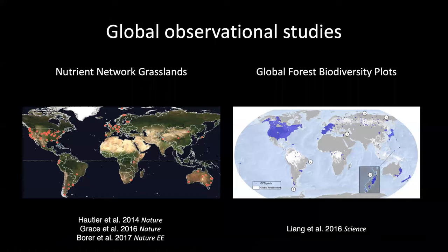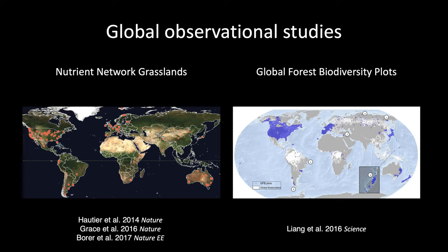Recent studies have also gone back to naturally assembled ecosystems, finding results similar to experimental results in NutNet grasslands and in forest inventories. There are also networks of observational studies conducted worldwide in drylands, marine ecosystems, and freshwater ecosystems. It's reassuring that these observational studies are finding results consistent with experiments, because the truth likely resides at the intersection of theory, experiments, and observations.